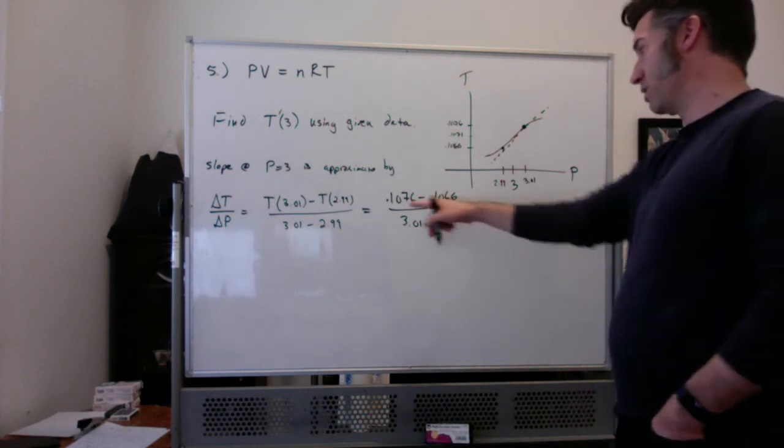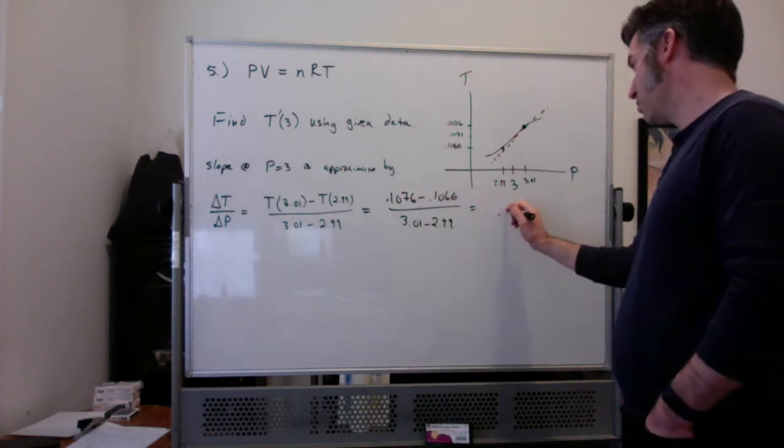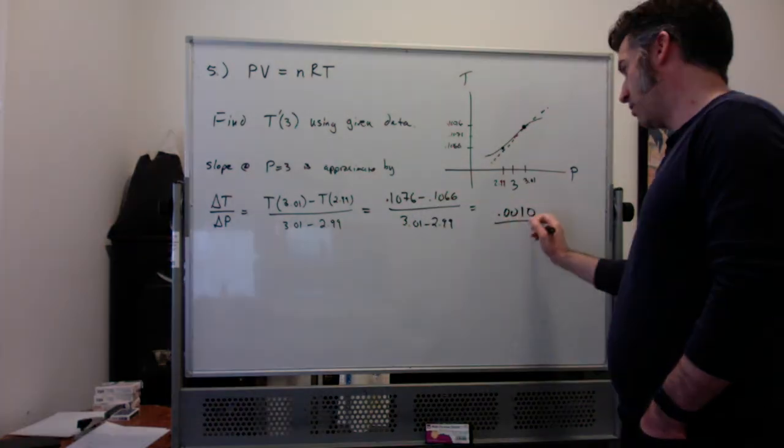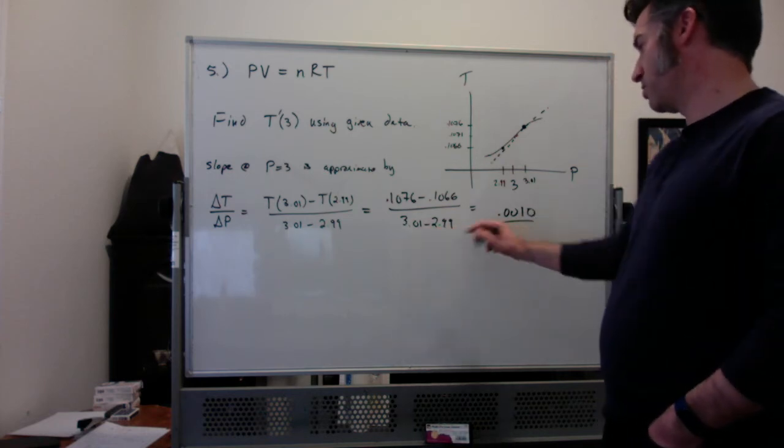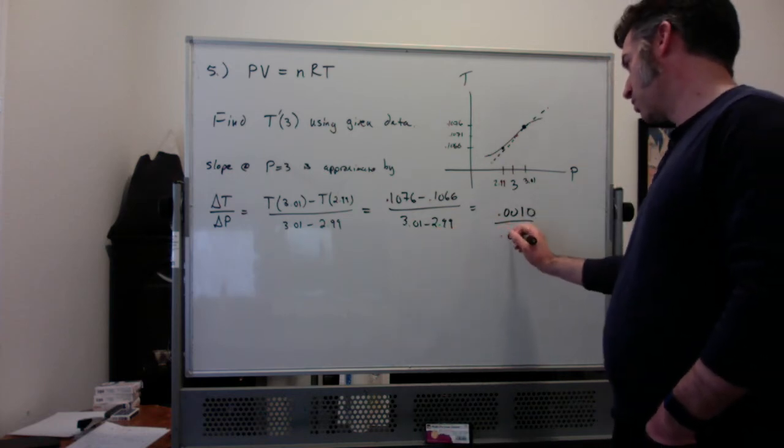So doing calculations, we're going to get, let's see, this is going to be 0.0010 divided by... sorry, the light just turned out a little bit. Let's see, 3.01 minus 2.99 is 0.02.